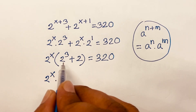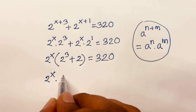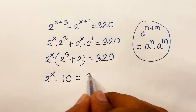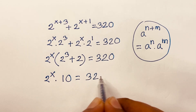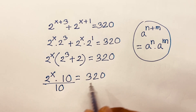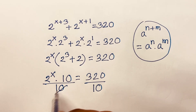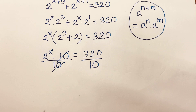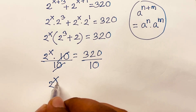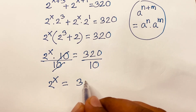2 to the power 3 is 8, and 8 plus 2 is 10, so we have 2 to the power x times 10 equals 320. Dividing both sides by 10, we find 2 to the power x is equal to 32.